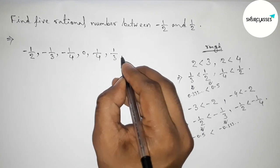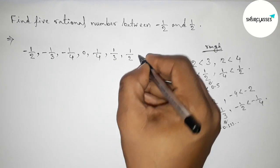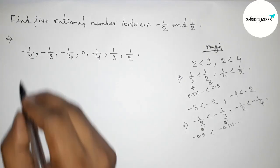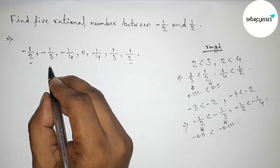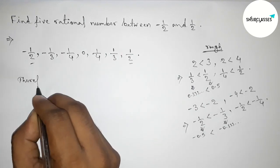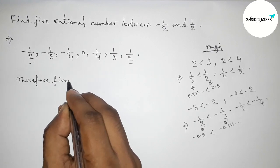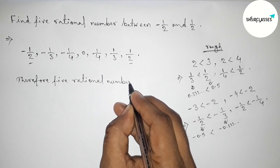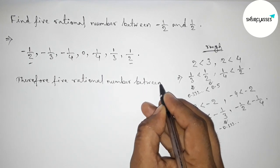So minus 1 by 4, and 0 is also a rational number, so 1 by 4, 1 by 3, and 1 by 2. So here between minus 1 by 2 and 1 by 2, these are 5 required rational numbers.